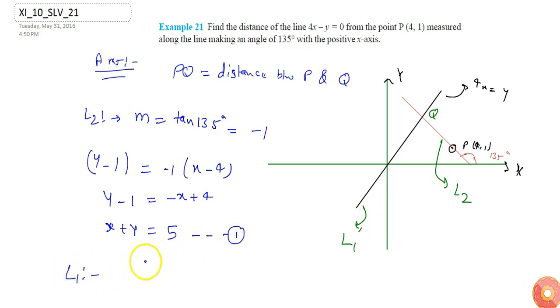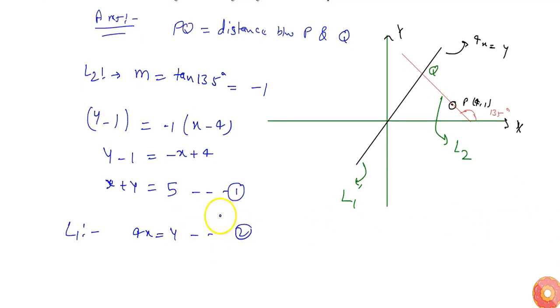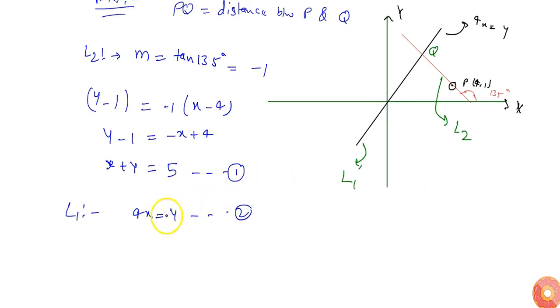And L1 is already given, which is 4x equals y. We are given 4x minus y equals zero, or 4x equals y is equation 2. From equation 1, x plus y equals 5, I can say x equals 5 minus y, so y will be 4.